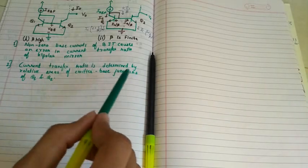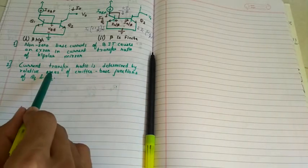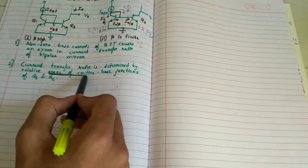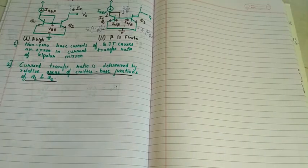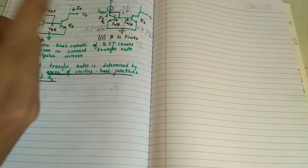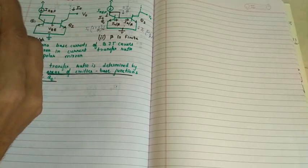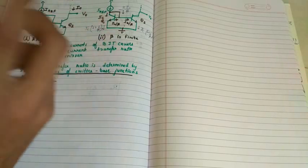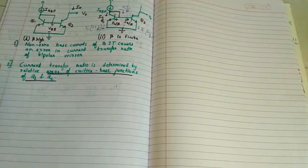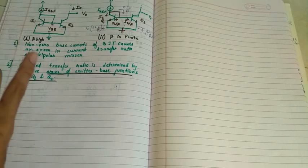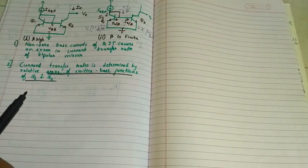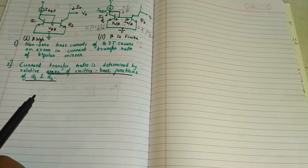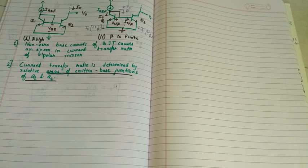Also, current transfer ratio is determined by relative areas of emitter-base junctions of Q1 and Q2 transistors. In MOS, the ratio was determined by aspect ratios W by L of both Q1 and Q2. Here, the higher the area of the emitter-base junction, the higher will be the current flowing to that particular transistor.